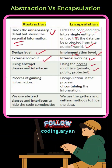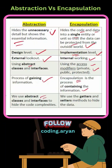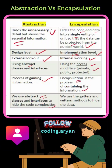Abstraction is the process of gaining information. Encapsulation is the process of containing the information. In abstraction, we use abstract classes and interfaces to hide the code complexities. In encapsulation, we use the getters and setters methods to hide the data.